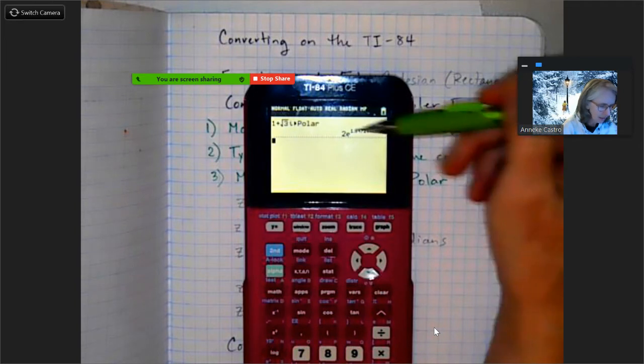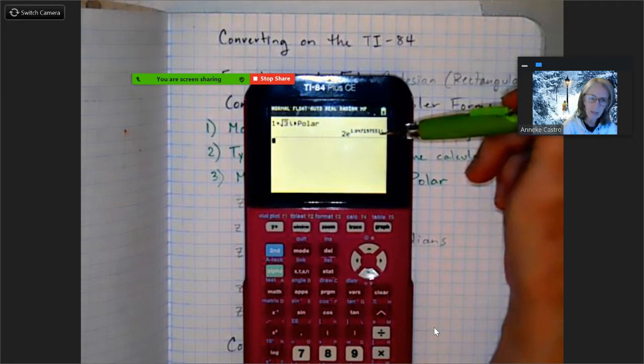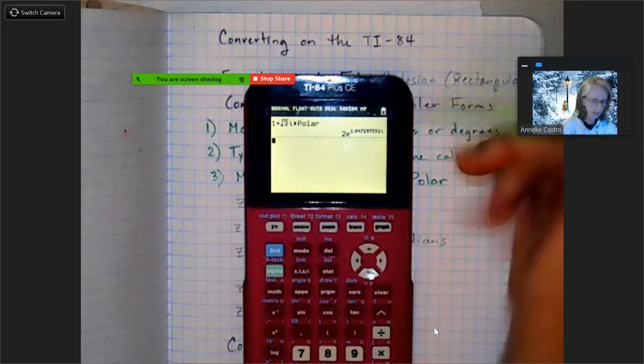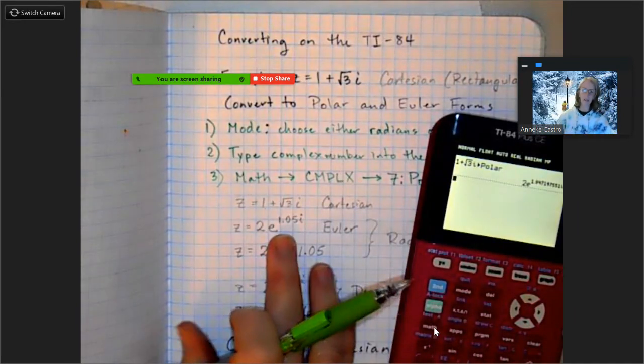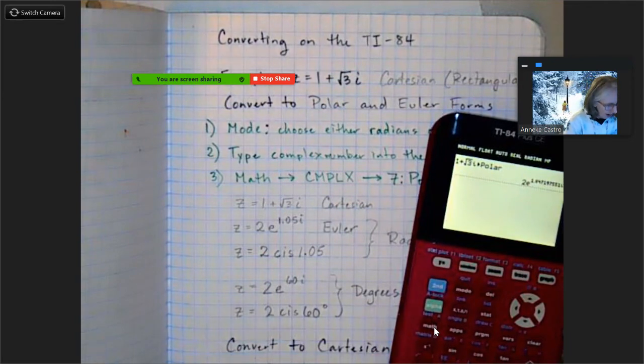You would want to write down every single one of those digits if you're going to use this in another calculation. You don't want to round it off to three significant figures unless that's your final answer. So what though if I wanted it in degrees?